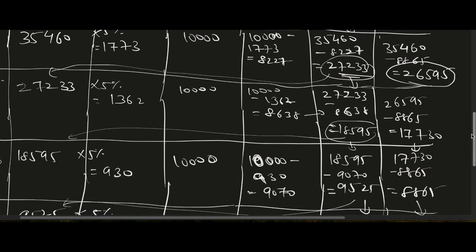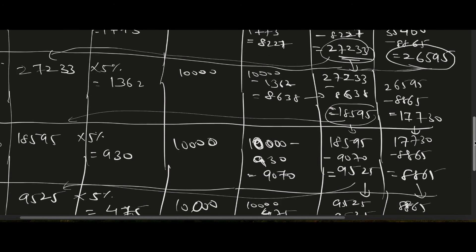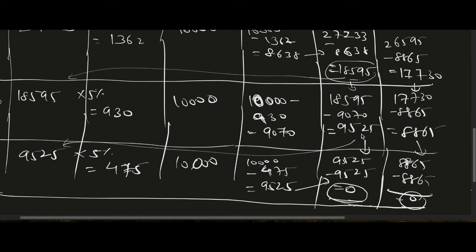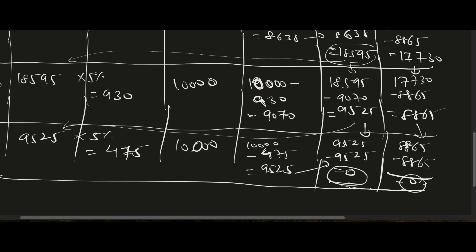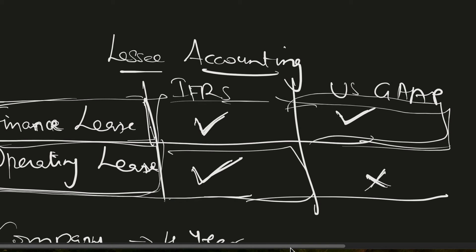To summarize Year 1: liability 27,233, asset 26,595. Year 2: liability 18,595, asset 17,730. Year 3: liability 9,525, asset 8,865. The asset depreciates at a faster rate than the liability decreases, but all balances come to zero at the end.